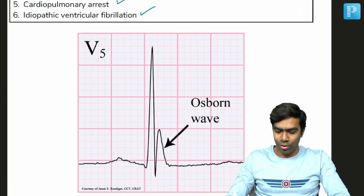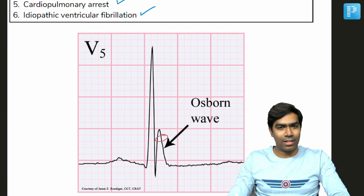And look at this EKG. This is the classic Osborn wave that we are going to get at the J point.